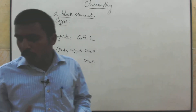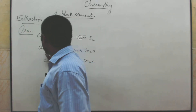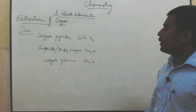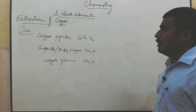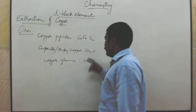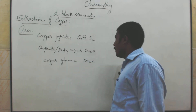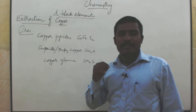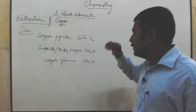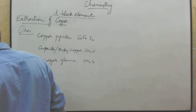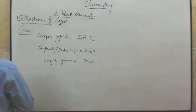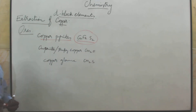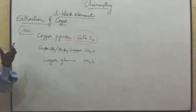These are the ores of copper: copper pyrite (CuFeS₂), cuprite or ruby copper (Cu₂O), and copper glance (Cu₂S). Even though copper is profitably extracted from its sulphide ores, namely copper pyrite, so copper pyrite is the chief ore of copper. CuFeS₂ — this is one of the sulphide ores.